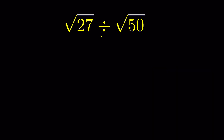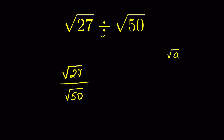We can use the same property of division and write it as square root of 27 upon square root of 50. When we have square root of a upon square root of b, we can write it as the square root of a upon b.